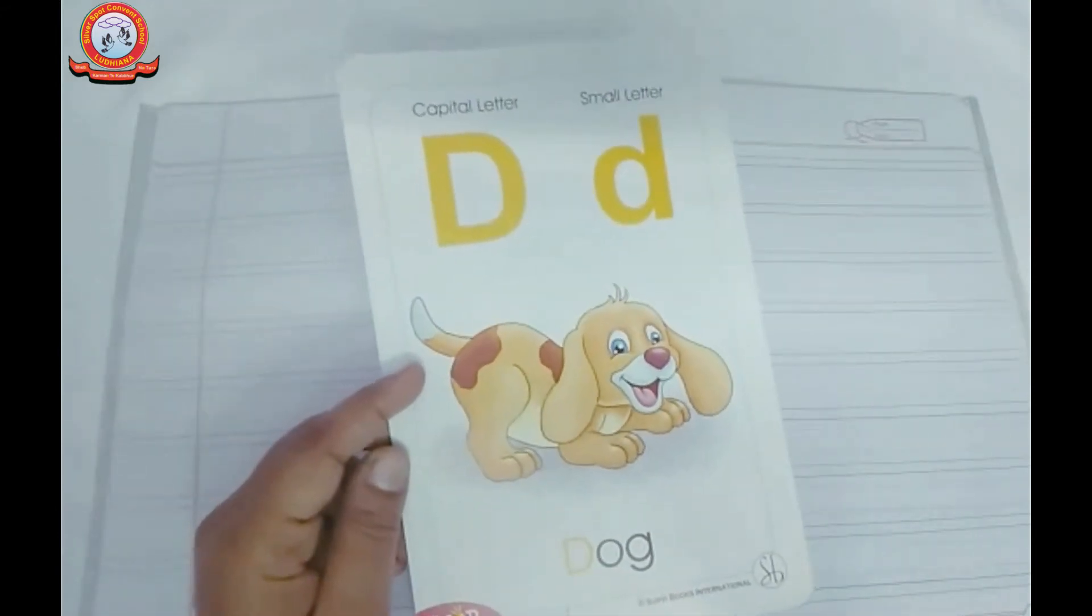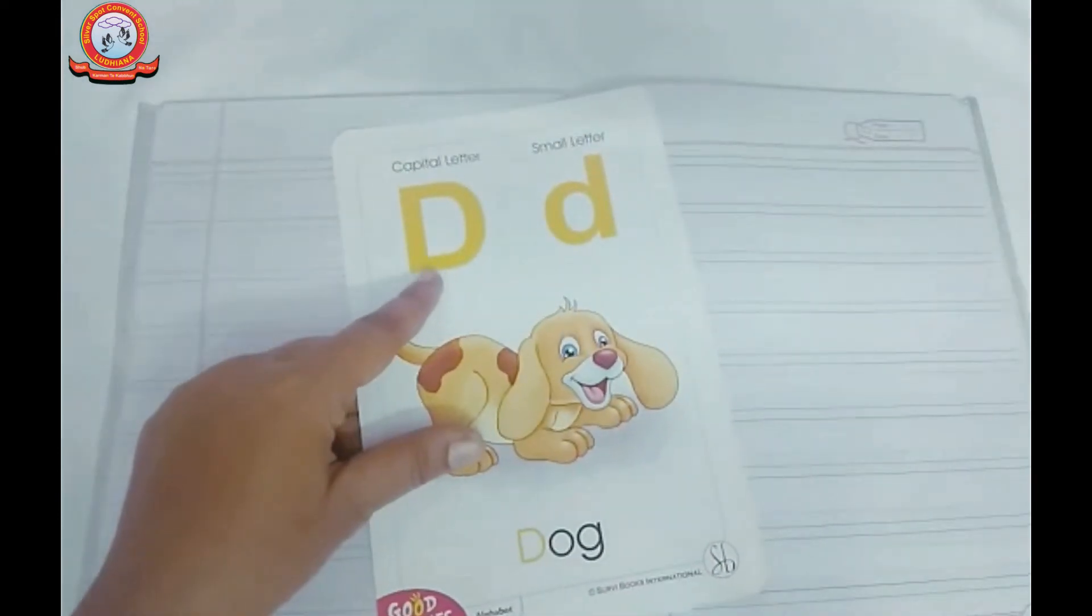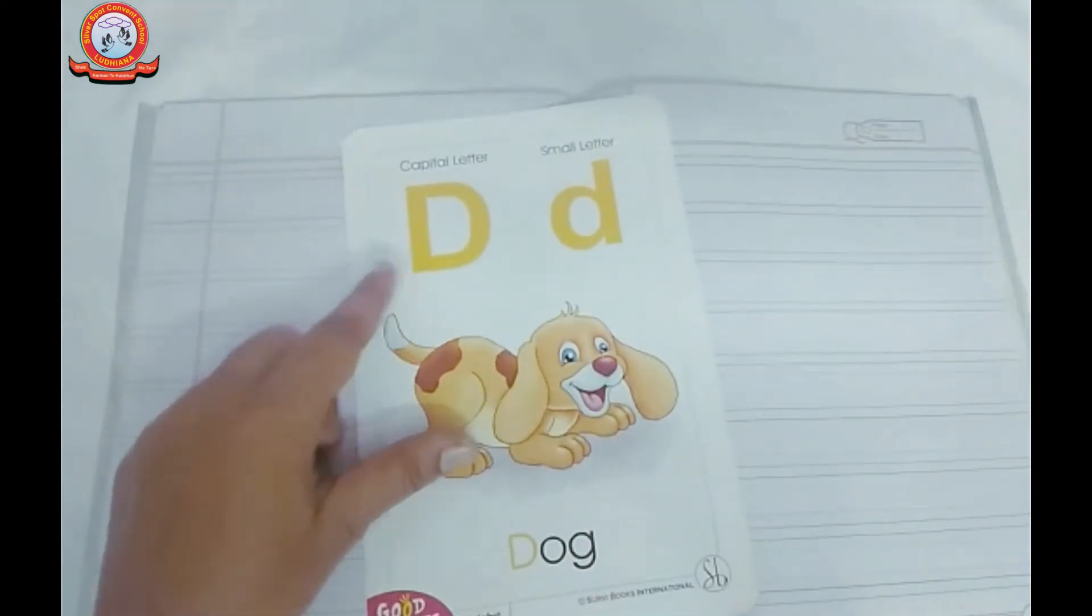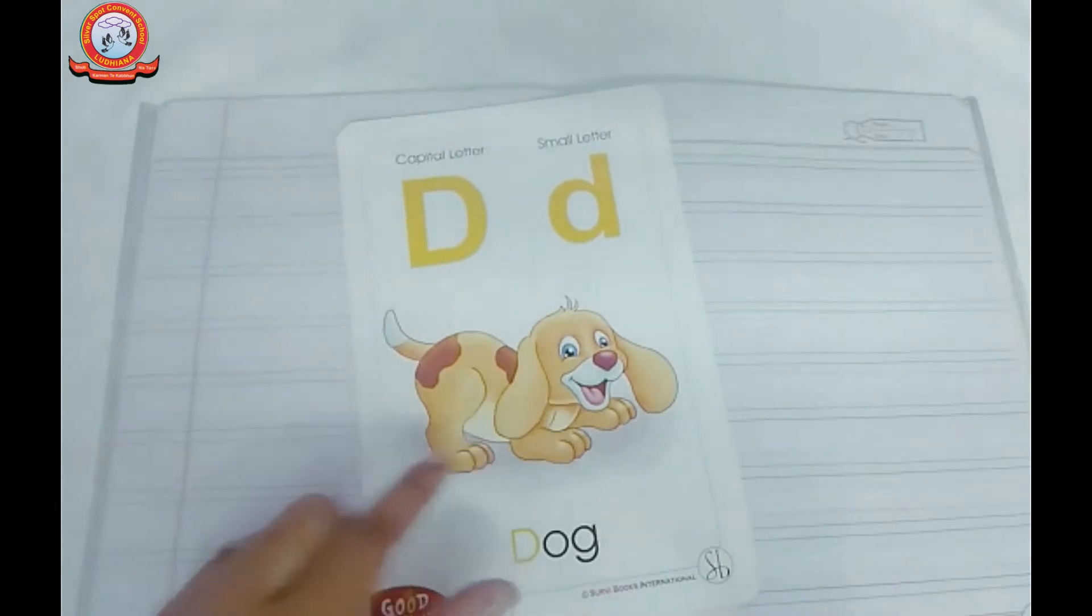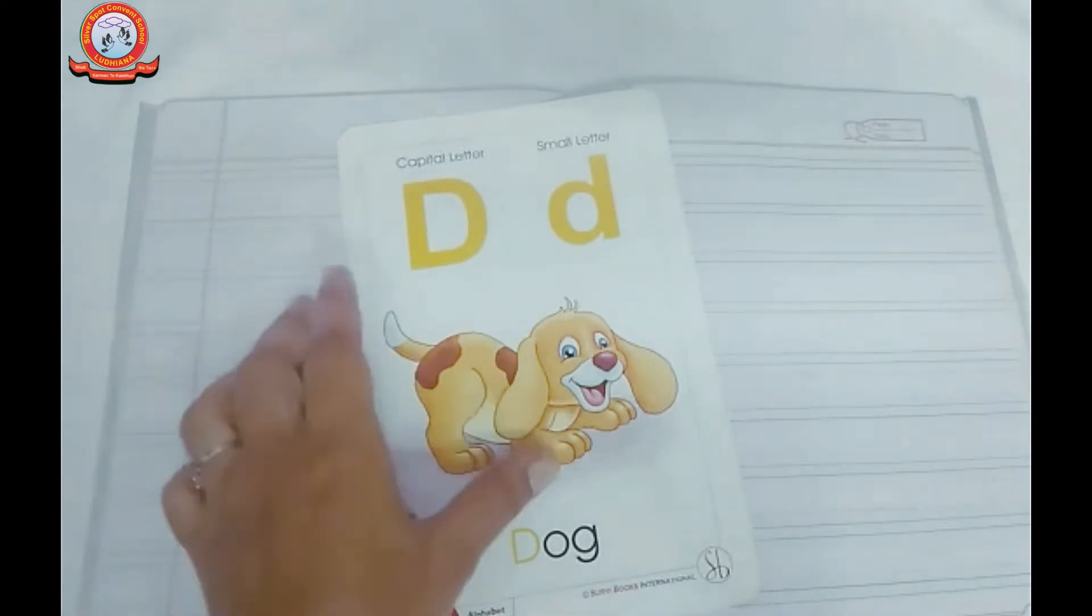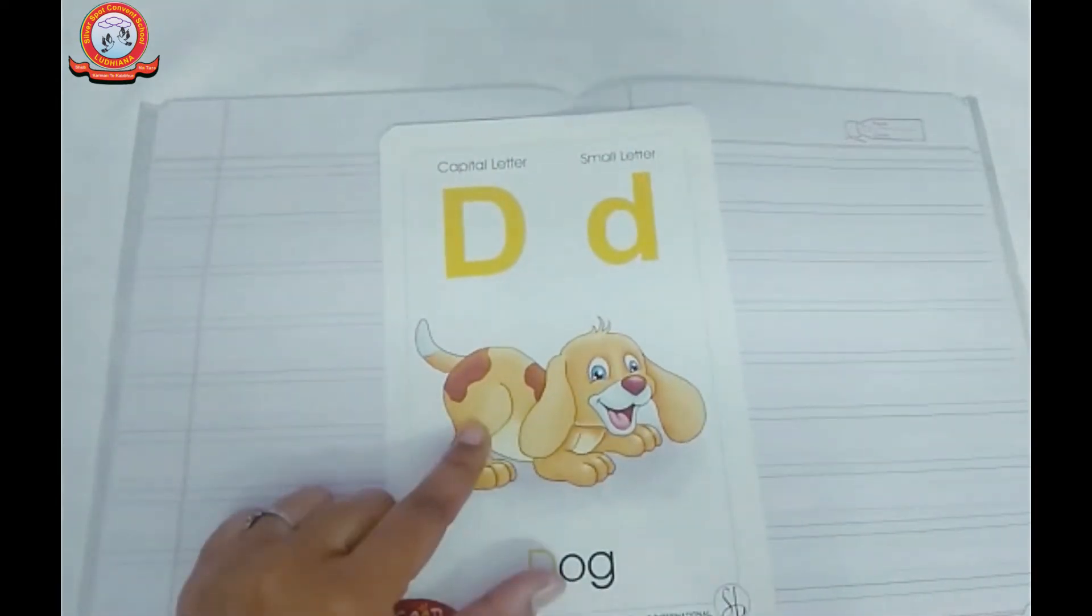What is the sound of letter D? D says D, D, D, dog. D की क्या sound होती है? D, D, क्या sound होती है? D, D, D, dog.